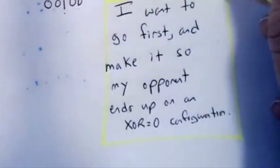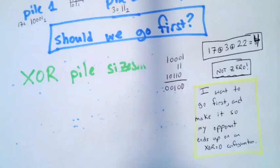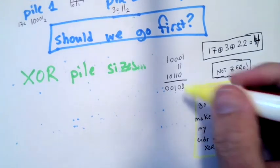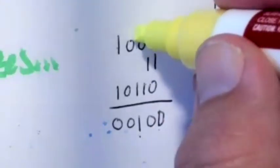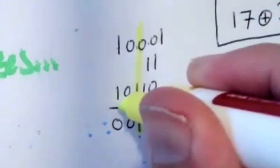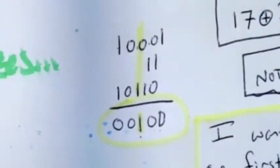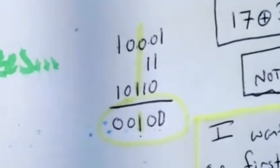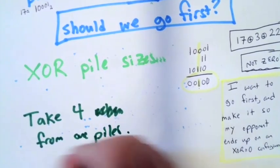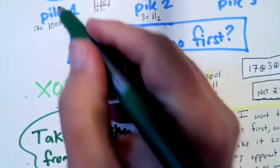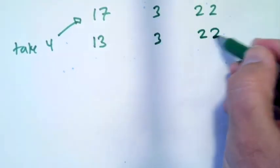So I want to make it so they end up on an XOR equals 0 configuration. What makes something XOR to be 0 is that you have an even number of 1s in every column. And if a number is XORed with itself, you get 0. So what I actually want to do is I want to take whatever my XOR result was from one of the piles. My move will be to take 4 from one of the piles, because that was the amount that I had when I XORed. So my move will result in 13, 3, 22.